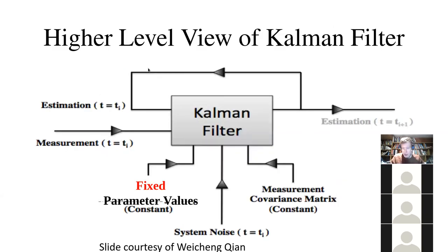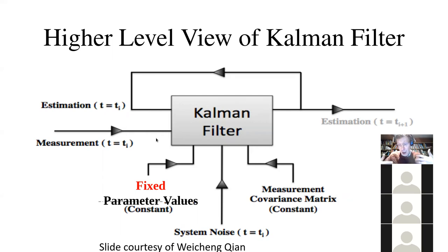This is a recursive system. We have estimates at any one time, and we combine them with measurements to get a consensus estimate of the current situation. That consensus then forms the basis — as we integrate it forward — for our next time estimate. We combine that with a new measurement and the system constantly evolves as new measurements come in. If this reminds you of hidden Markov models, it is with good reason — that's very much the flavor.